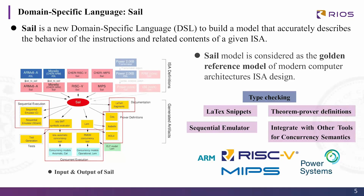SAIL is a language for describing the ISA semantics of processors. It describes the behavior of instructions and hardware environment of a given ISA. Given the ISA definitions as input, SAIL will type-check it and generate many artifacts like sequential execution model, concurrent execution model, etc. Due to its expressive type system and static checks, SAIL model is considered the golden reference model of modern computer architecture ISA design.